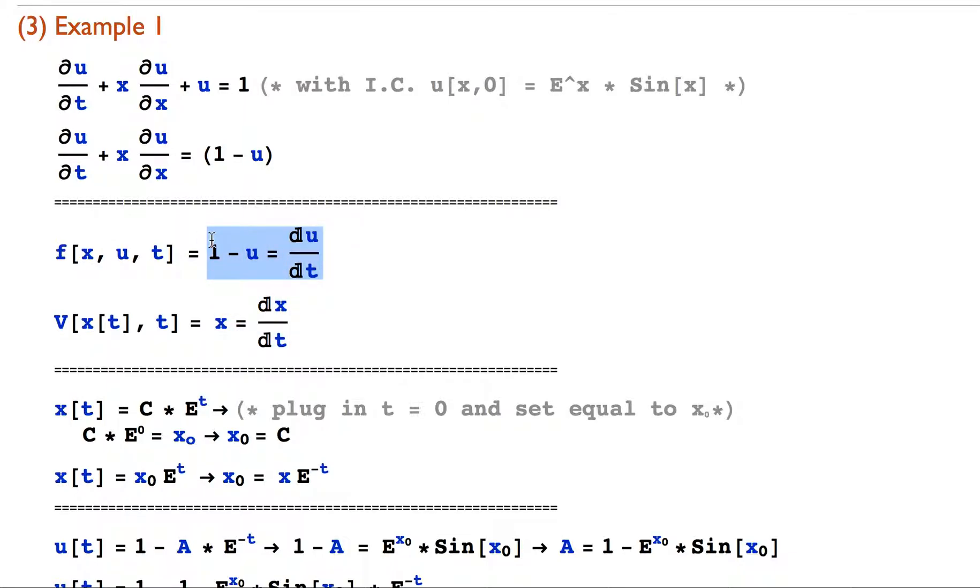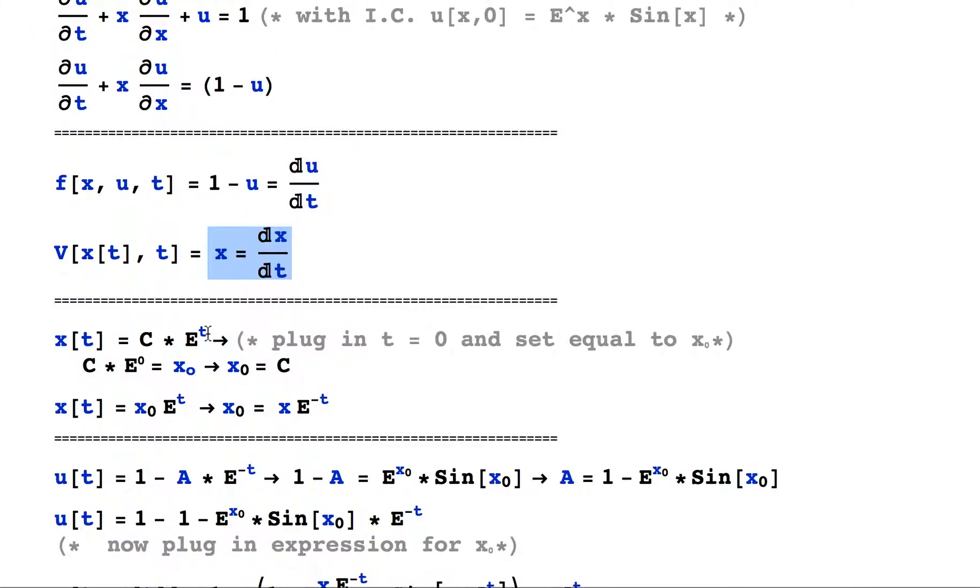And then now you can see we have two ordinary differential equations that if we solve them, then we'll be done. So I'm going to go ahead and integrate this by separating the variables. It's a pretty easy integration. You get that x of t is equal to some constant times the exponential function of t.